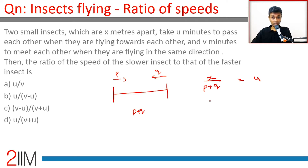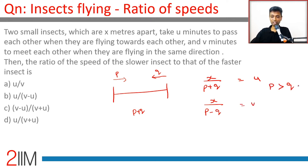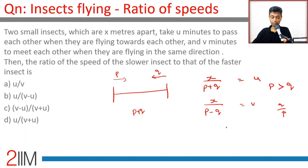They take v minutes to pass each other when flying in the same direction. Relative speed is p minus q — we're assuming p is greater than q. We want to find the ratio of the speed of the slower one to the faster one, that is q by p.